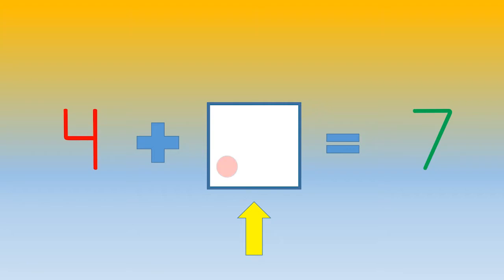4, 5, 6, 7. How many dots did you draw? 3. 4 plus 3 equals 7.